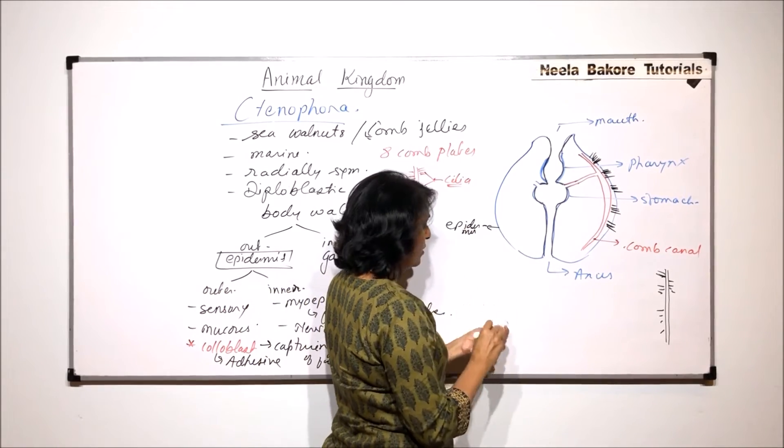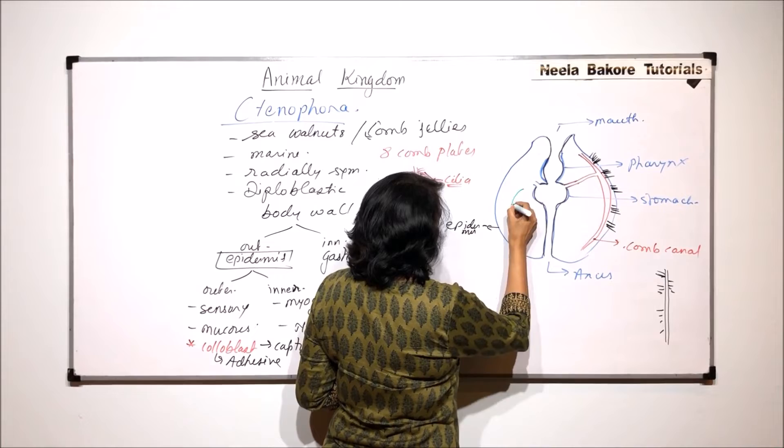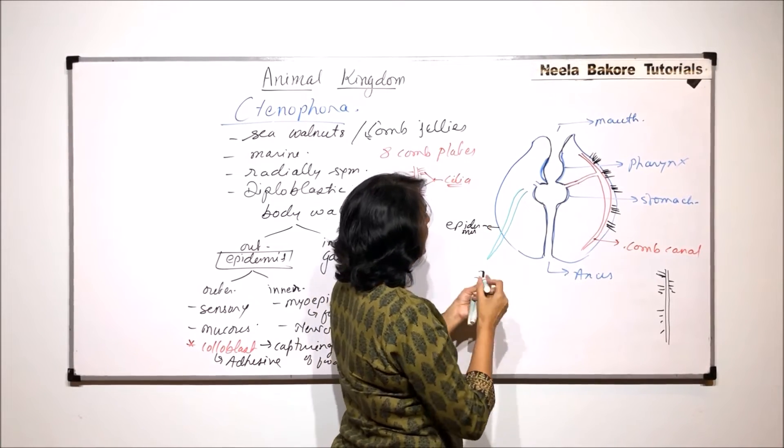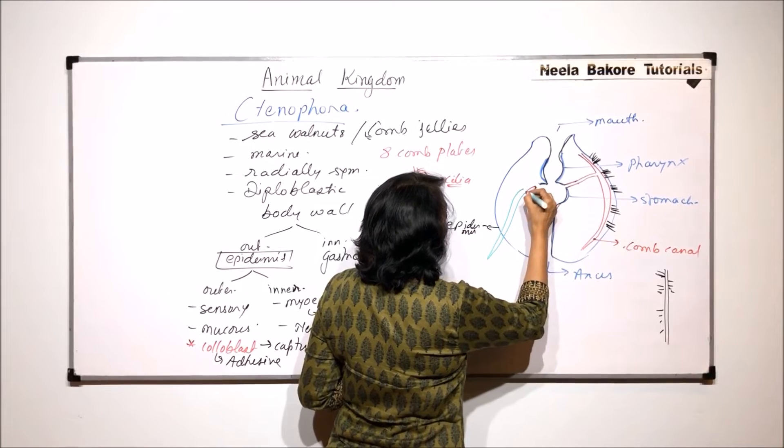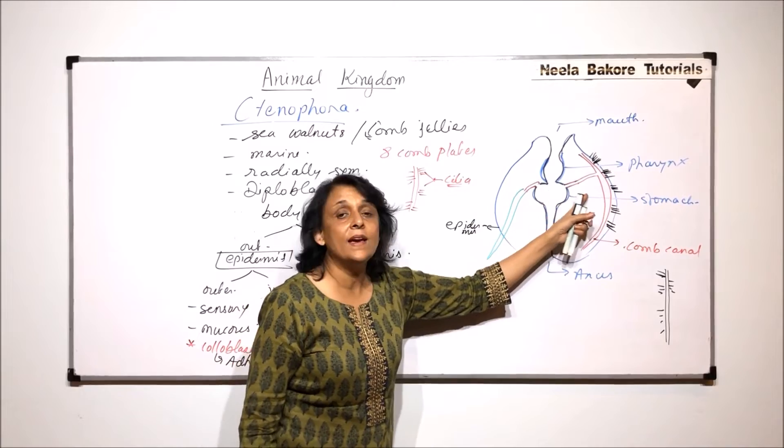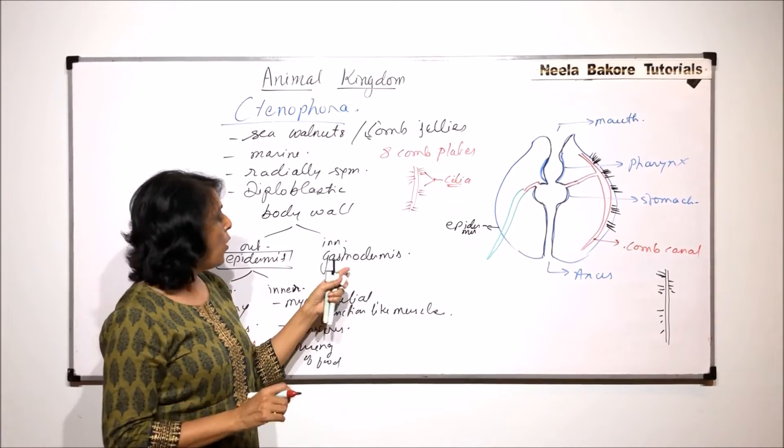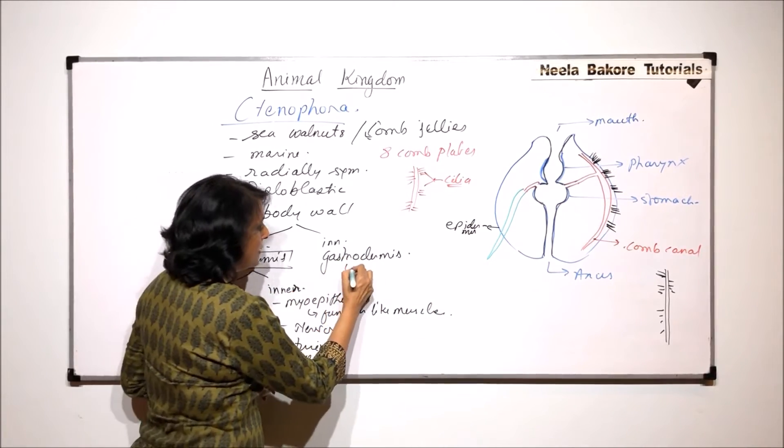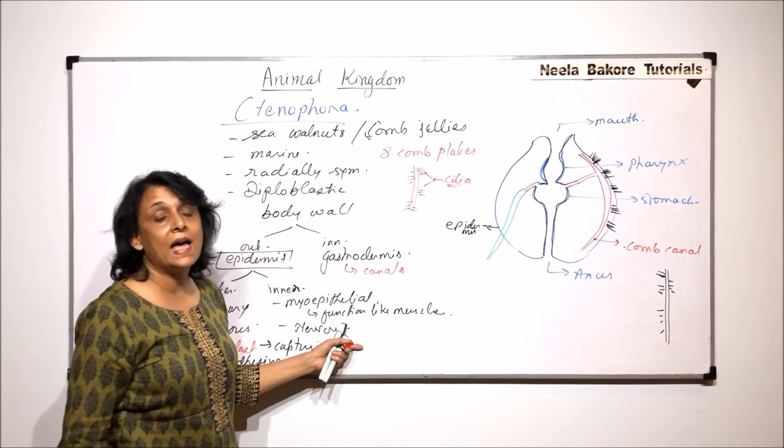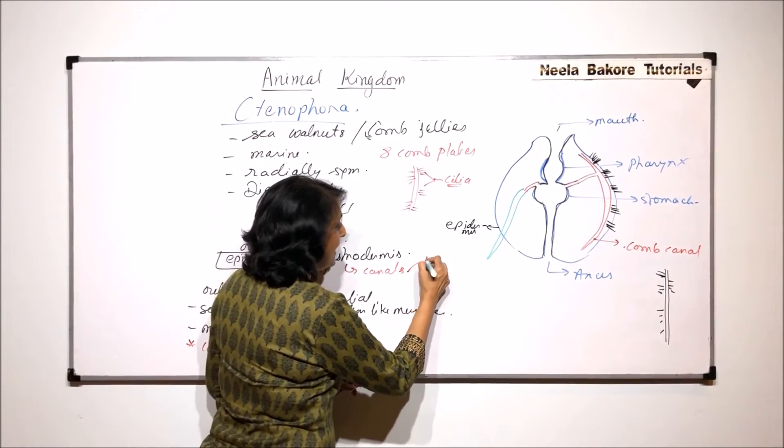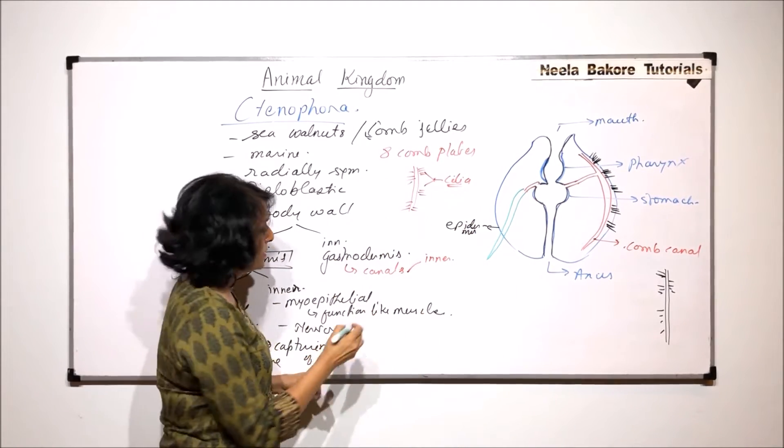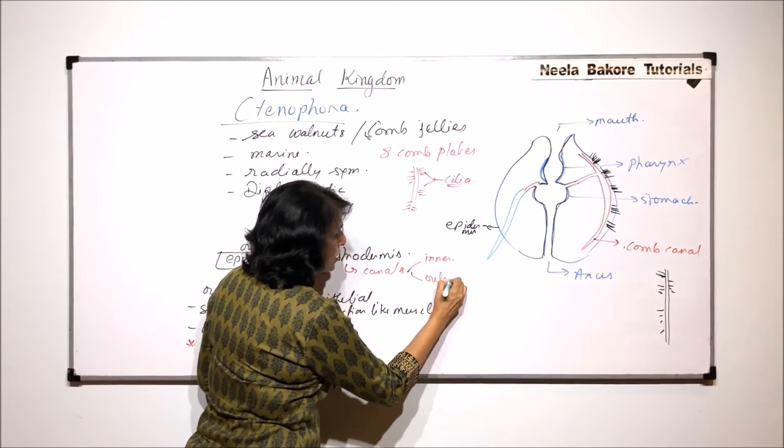These canals actually go and join the other canals. This is comb canal. Suppose here we draw a tentacle. And the canal will go and supply into this tentacle also. So from here gastrodermis also gives rise to canals. And the cells of these canals are again different: the inner cells, which are towards the digestive system, and the outer cells. The outer cells are towards the outer side, that is towards the body wall.